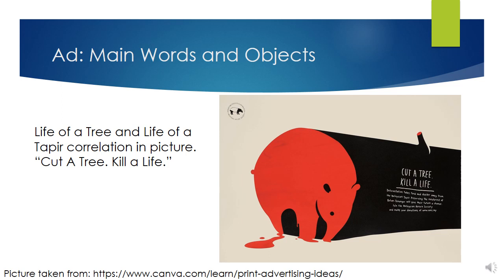The words on the log say: cut a tree, kill a life. These words correlate the death of a tree with the death of an animal in six simple words. The main words are effective because they are short and precise in complementing the ad's purpose.